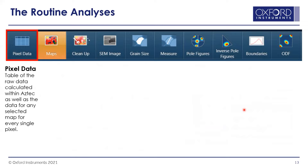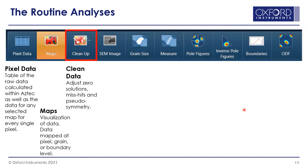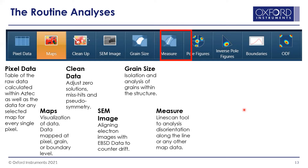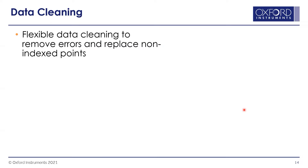Here's the routine analysis. Starting with pixel data — your raw data — the real key to routine analysis is the maps. You'll see orientation maps, grain maps, and similar things. Cleanup is for adjusting miss-hits or zero solutions. There's a SEM image mode that lets you adjust for any drift, so you can align electron images with the EBSD data. Then grain size analysis, measurement tools for measuring disorientation point to point or along a line, and then texture analysis: pole figures, inverse pole figures, boundary analysis, and ODF features.